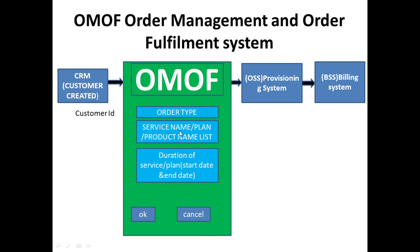So this is the activation of service. That particular service name is entered and after that, in OMOF, the service duration is also recorded — meaning from which date to which date, for which duration you want this particular service. All these details get stored into OMOF. If all details are correct you can click OK, otherwise you can cancel the order.